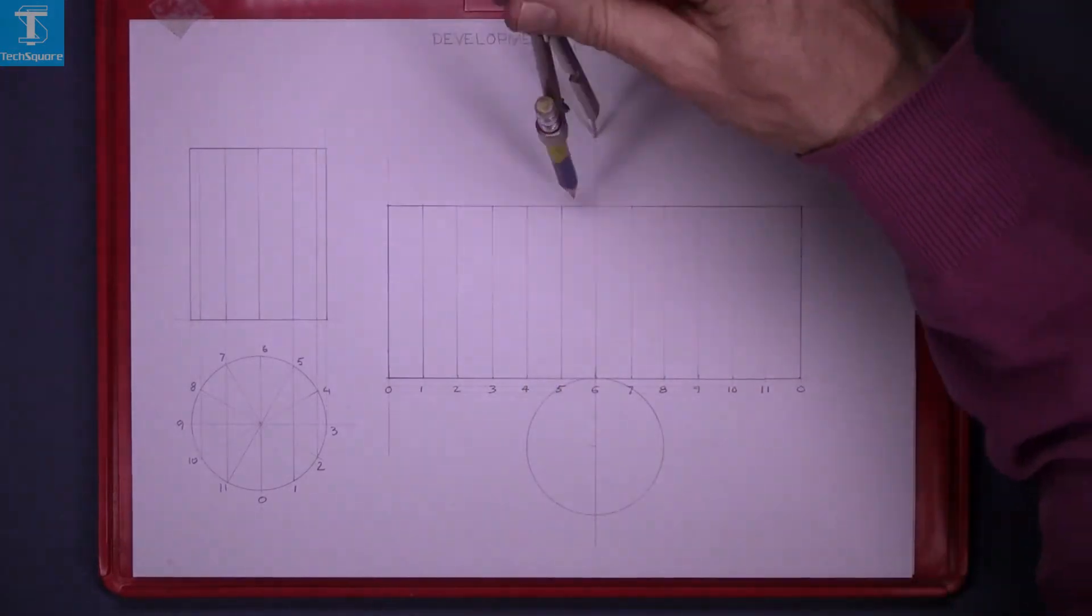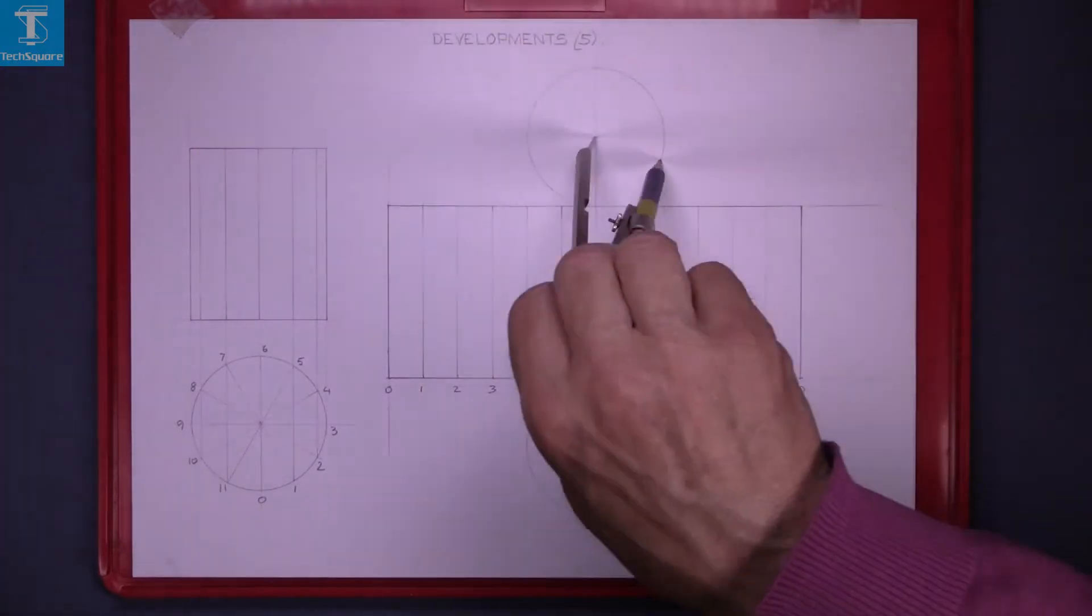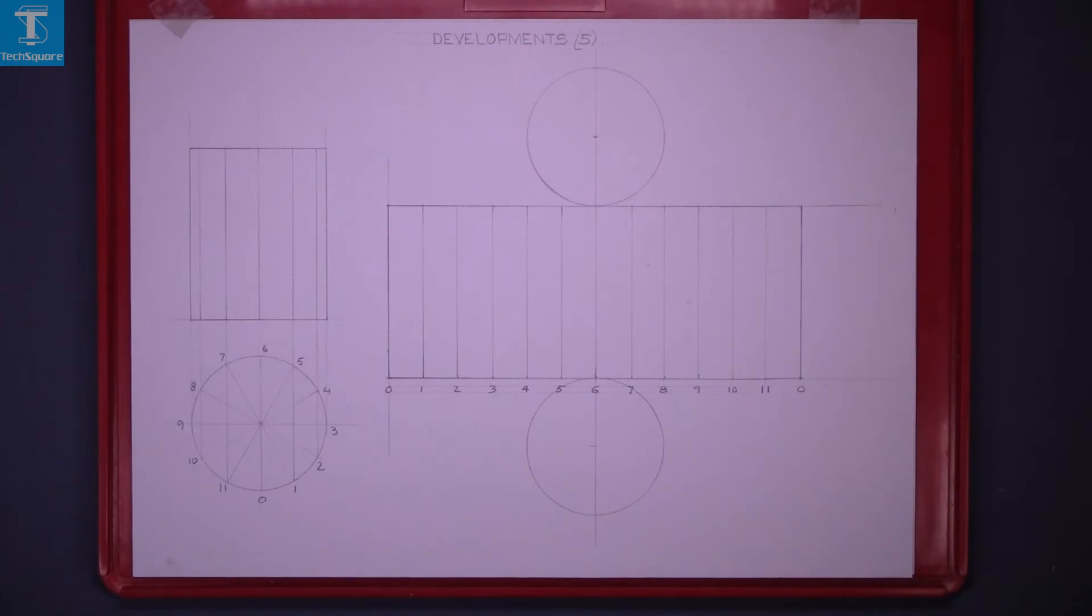Draw in your circle and that is the development of the cylinder and that's Developments 5 complete.